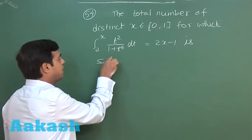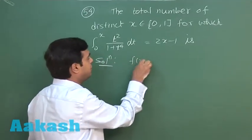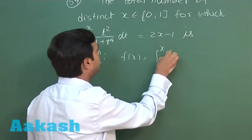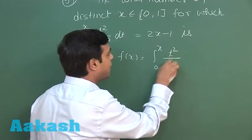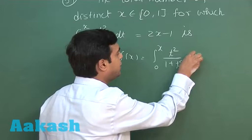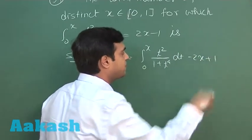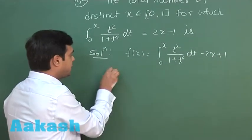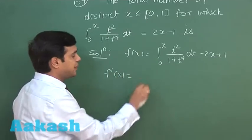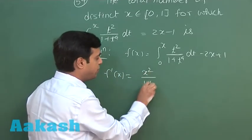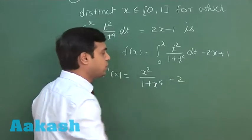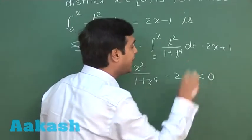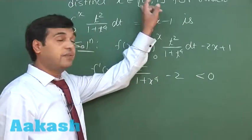Let us start this one by assuming a function, integral 0 to x of t square upon 1 plus t to the 4 dt minus 2x plus 1. If I differentiate this function, I get f dash x equals x square upon 1 plus x to the 4 minus 2, which is clearly negative for the interval 0 to 1.